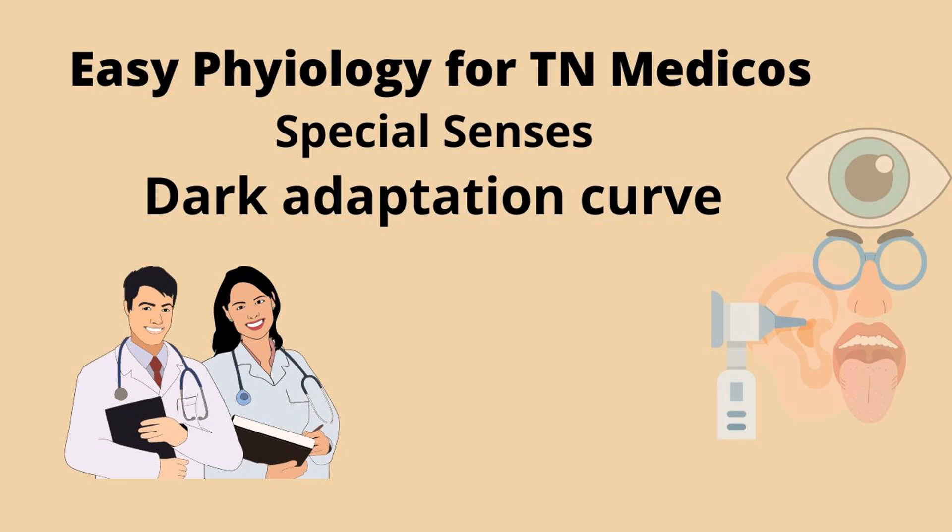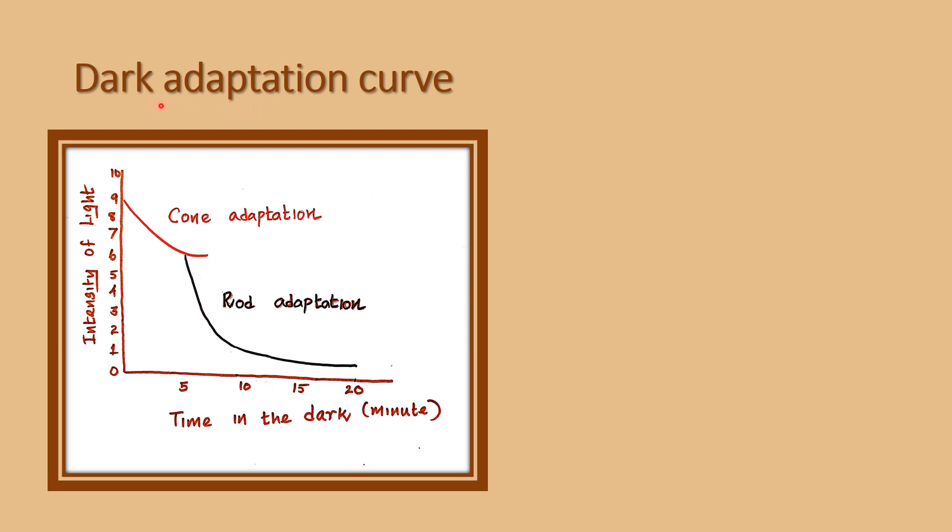Vanakam, good morning. In this video, we are going to discuss the dark adaptation curve. The x-axis depicts the time in the dark room, and the y-axis depicts the log-threshold intensity of the light.